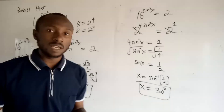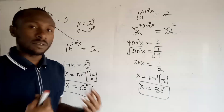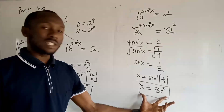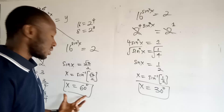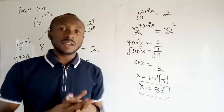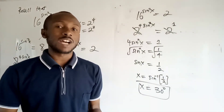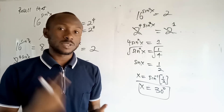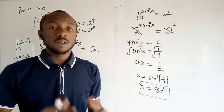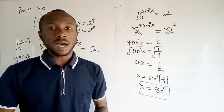We've come to the end of this calculation. The values of x are 30 degrees and 60 degrees. If you find value in this video, please subscribe so you will see our next video upload. We love you and God bless you. Bye.